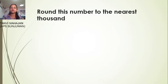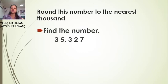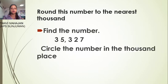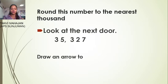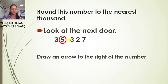Now round this number to the nearest thousand. Thirty-five thousand three hundred twenty-seven. Find the number — circle the number in the thousands place. Five stands in the thousands place. Look at the next door: draw an arrow to the right. Three is on the next door.